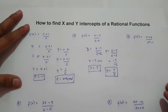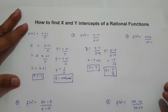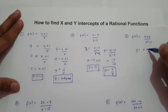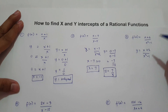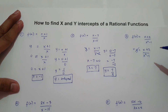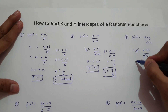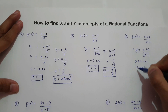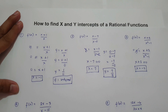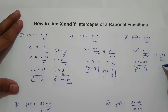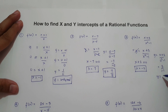What about number 3? We have y = (x + 2) / (x² − 1). For x intercept, change y to 0, then equate the numerator to 0: x + 2 = 0, so x equals negative 2. To find y intercept, substitute x = 0: (0 + 2) / (0² − 1) = 2 over negative 1. Y intercept is negative 2.